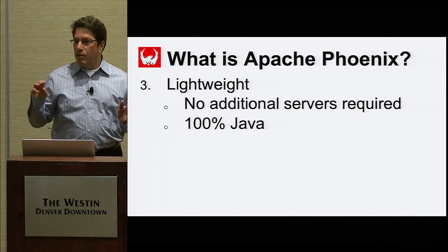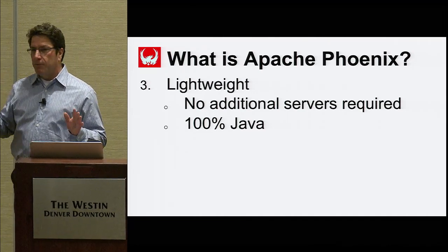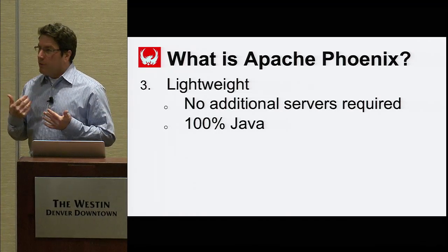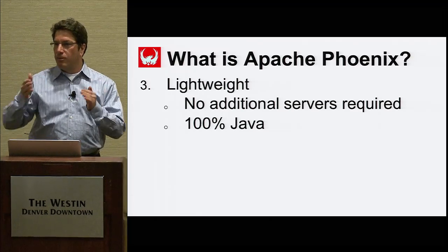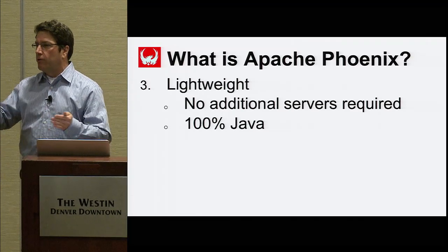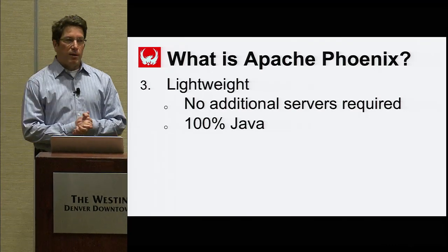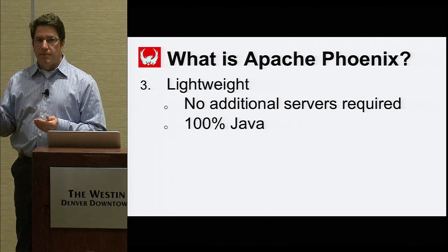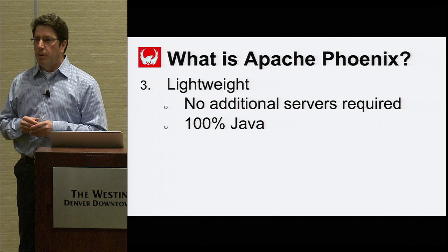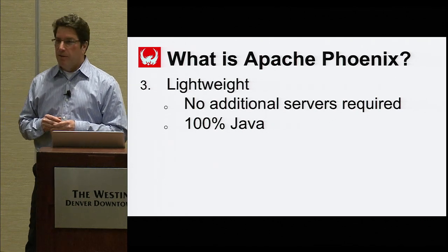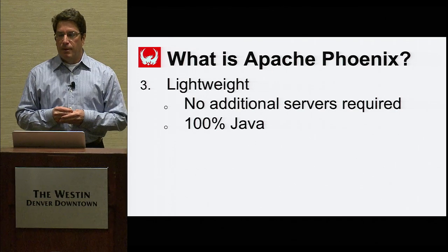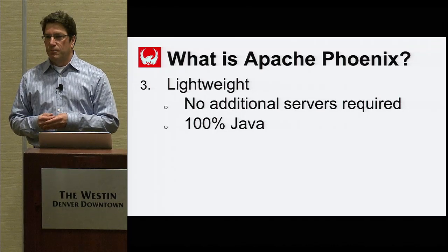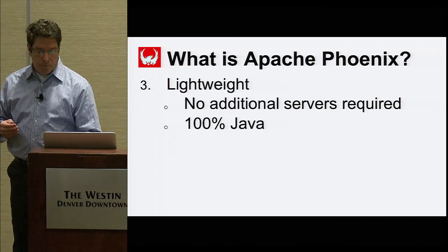Number three: Phoenix is lightweight. There are no additional servers to set up to use Phoenix. It's 100% Java and very simple to install — all you do is copy a jar into your HBase lib directory on all your region servers. Or you can use a distribution that already bundles Phoenix. For example, the next Hortonworks distribution is going to bundle the 4.0 version of Phoenix, so no installation is needed. Phoenix is also available on Amazon EMR, so there's no setup required if you use AWS.